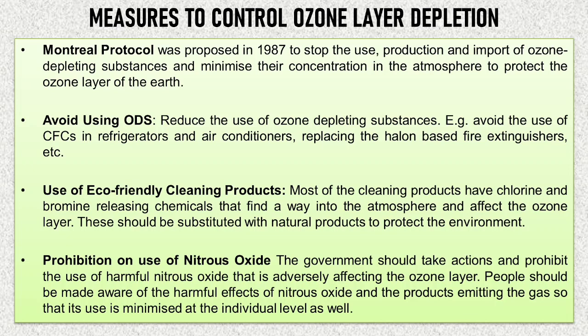To reduce the use of ozone depleting substances, we should avoid the use of CFCs in refrigerators and air conditioners, and replace halon-based fire extinguishers. We should also use eco-friendly cleaning products, as most cleaning products contain chlorine and bromine which release these chemicals into the atmosphere, contributing heavily to ozone layer depletion. The government should take action and prohibit the use of harmful nitrous oxide, and people should be made aware of its harmful effects so that its use is minimized at the individual level.